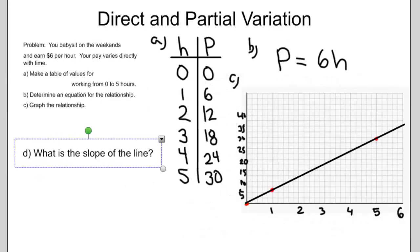Let's look at a different question. Question D: What is the slope of the line? Remember from our previous work, slope is equal to rise over run.